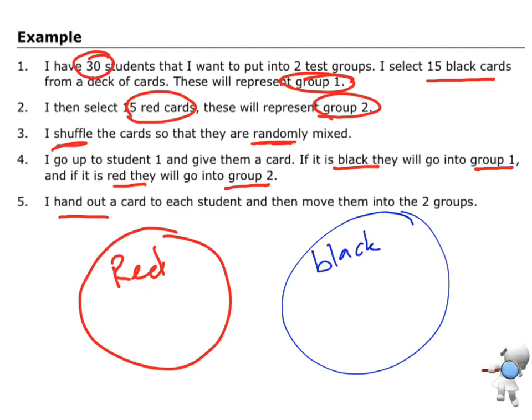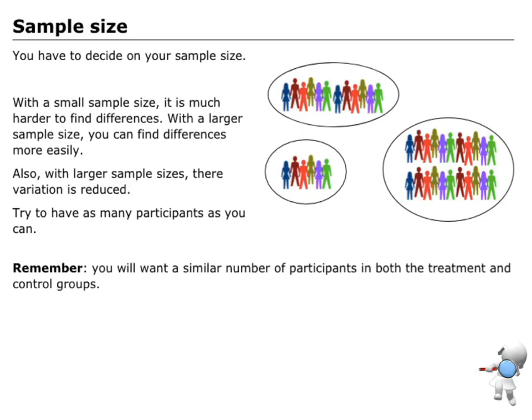So that's a way of writing some instructions to randomly allocate people into these two groups. Another thing that you need to think about in design is your sample size.